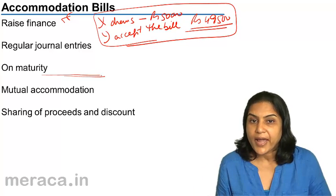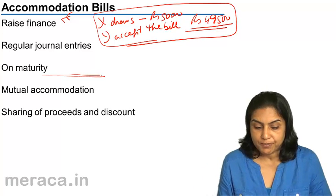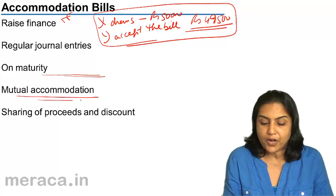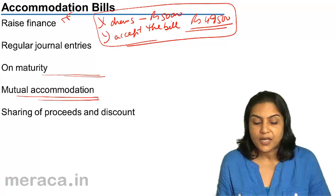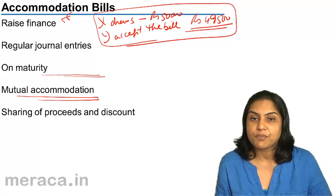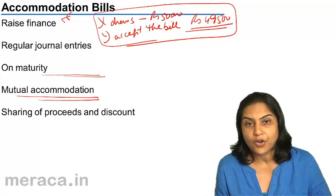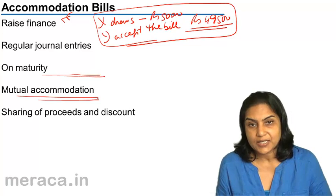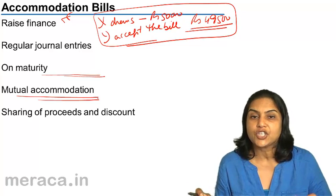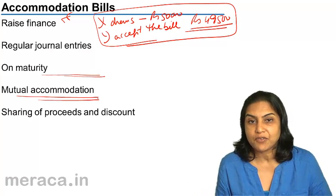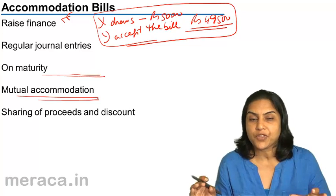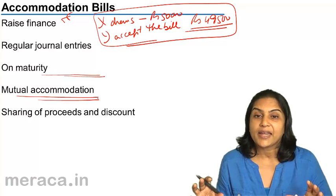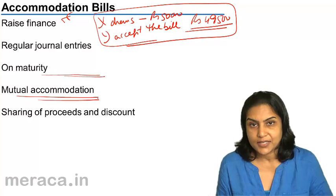These are called accommodation bills. Sometimes we have mutual accommodation, where X draws a bill on Y and Y also draws a bill on X. So there are two bills — each party has a bill, each of them can take it to the bank, discount it, and get short-term finance.